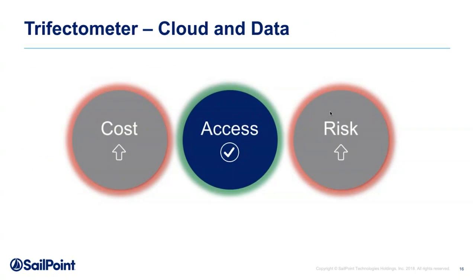The trifectometer is not happy now. The cloud and data revolution messed things up. Cost increased because there's so much to manage, risk really increased because now there's so much that a human cannot cognitively understand exactly what they should be approving and what they shouldn't.